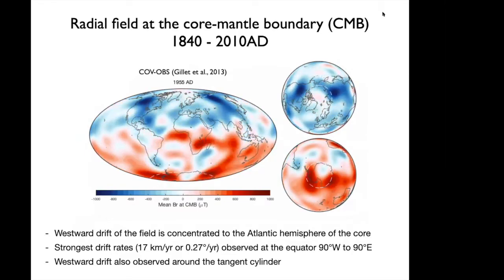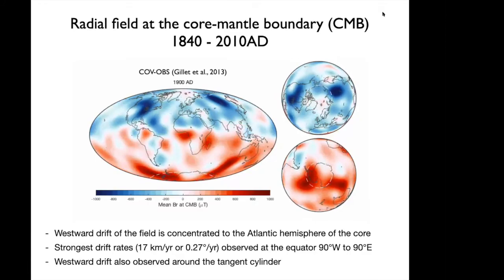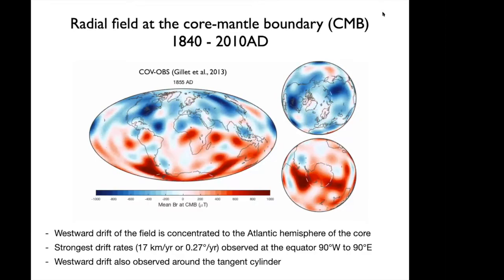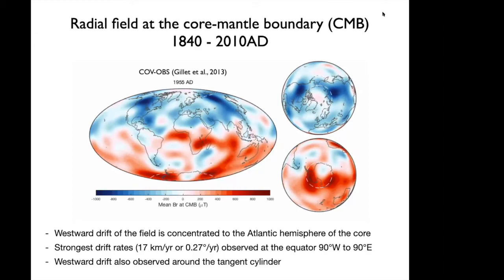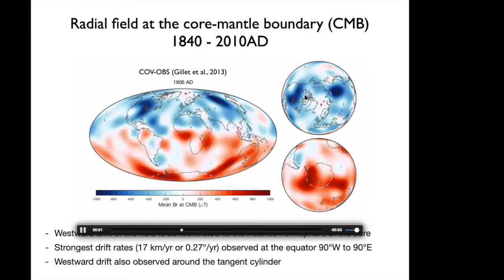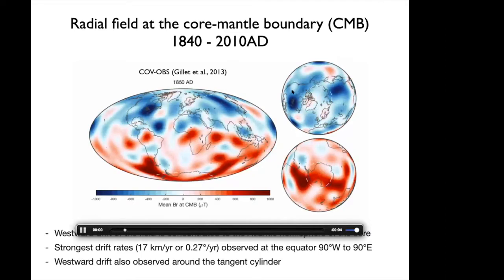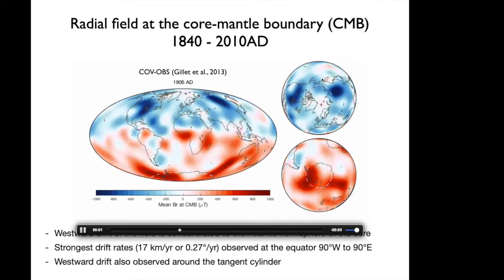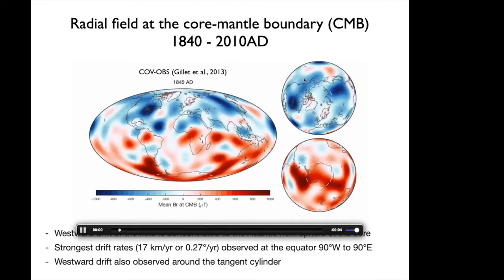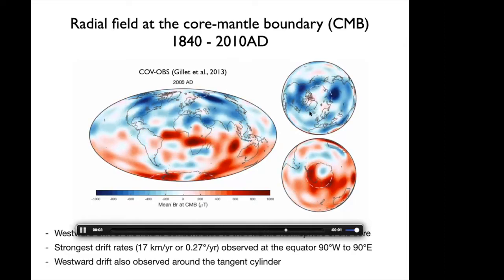We also see strong westward drift around the tangent cylinder — this imaginary cylinder around the inner core aligned with the rotation axis. We see these both in the Pacific hemisphere and in the Atlantic hemisphere.